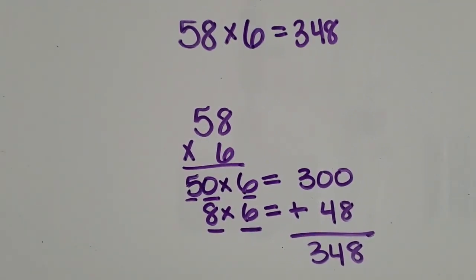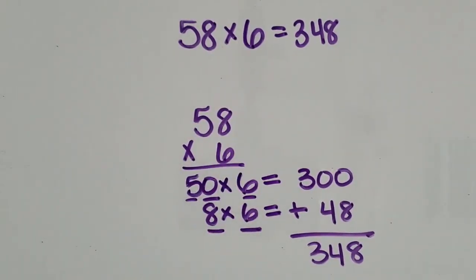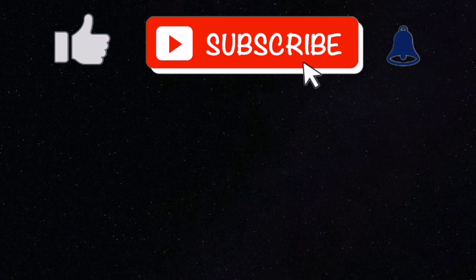We want students to make the connection after they practice with area model, but now we're doing it without using the rectangle or the square. We multiplied a two-digit number by a one-digit number using the partial product.